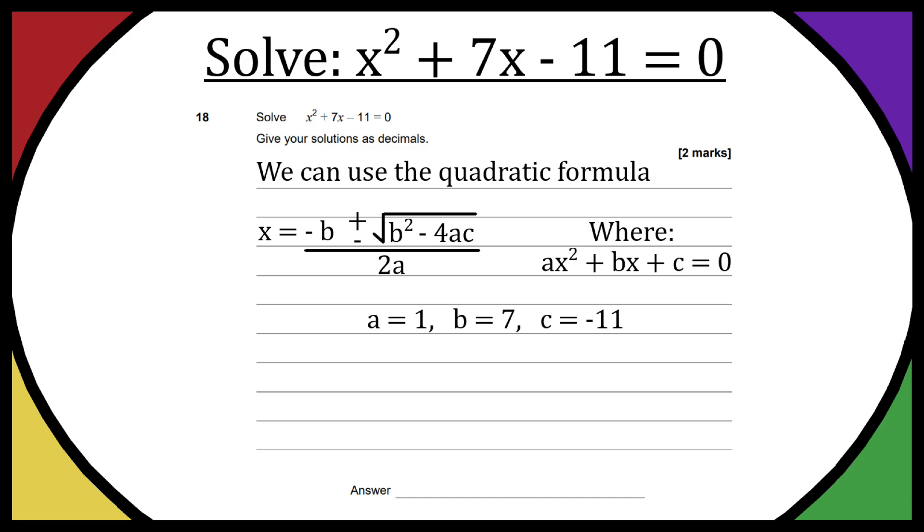All we have to do is substitute these values into the quadratic formula. We get x = (-7 ± √(7² - 4×1×(-11))) / (2×1). So our two solutions are going to be x = (-7 ± √93) / 2.